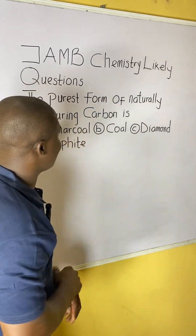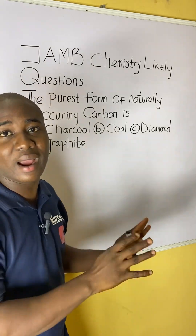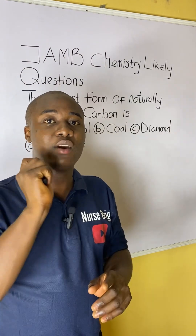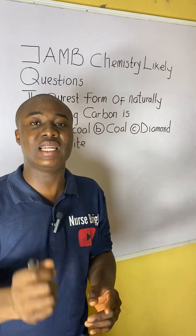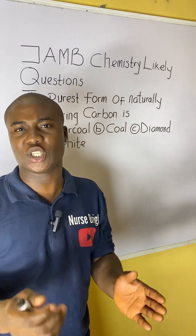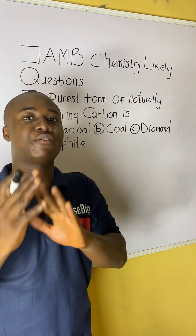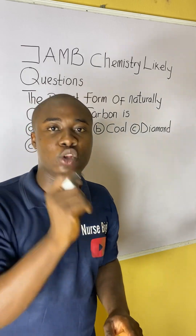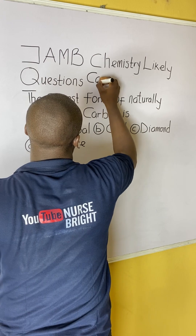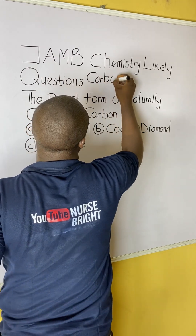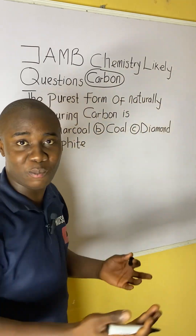The purest form of naturally occurring carbon is... Now, before solving any question in chemistry, it is important for you to know specifically the topic to which that question is from. This question is from a very important non-metal, and that non-metal is simply called carbon. So, basically, this question is on carbon and its compounds.